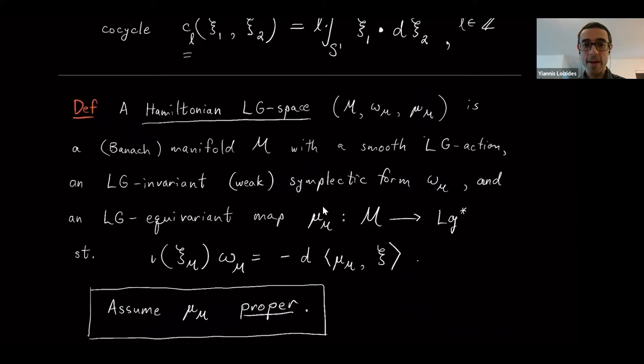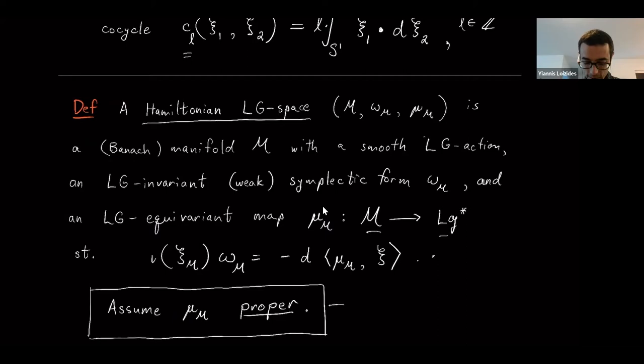Now I'll review the definition of a Hamiltonian loop group space. It's a smooth Banach manifold with a smooth action of this loop group LG. It should have an LG-invariant weak symplectic form and a moment map. The moment map goes from M to this LG-star, the space of connections on the circle, and it should satisfy the usual moment map condition. A key assumption we're always going to make is that this moment map mu is proper.